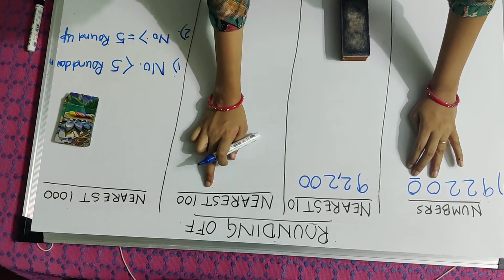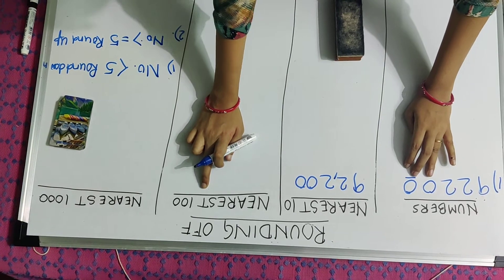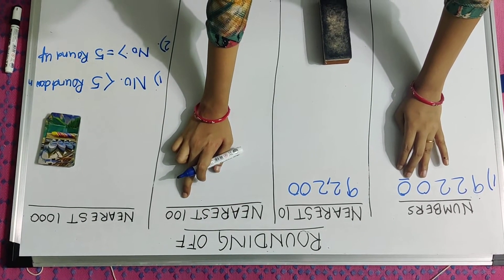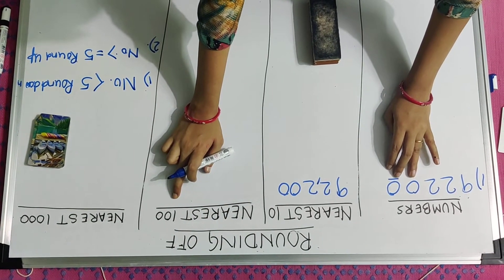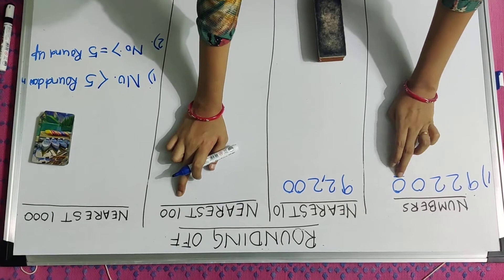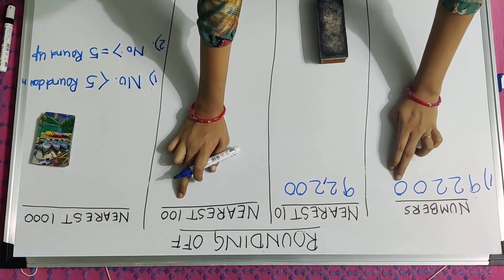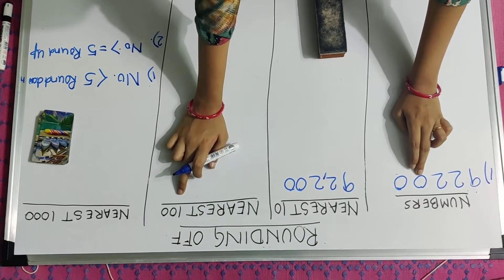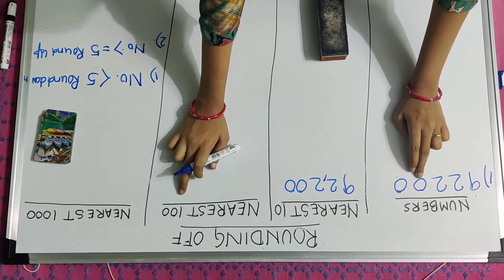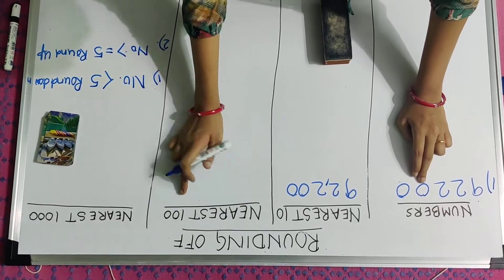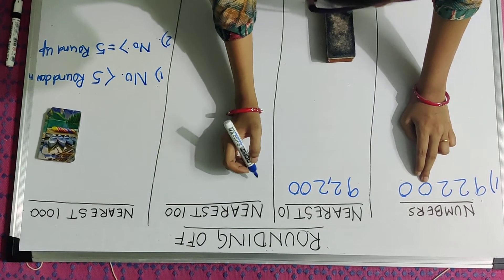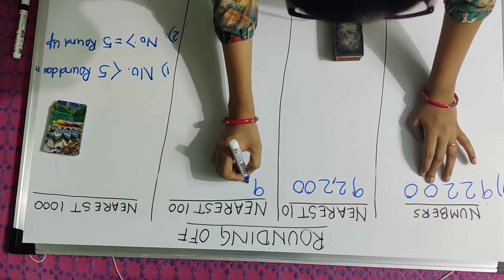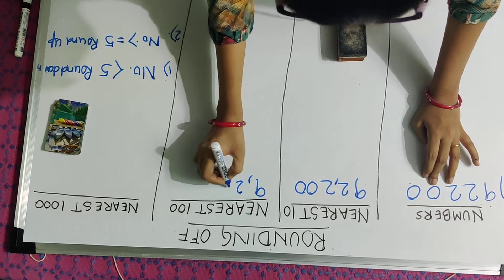My second activity is to round this number to its nearest 100. In that also I have to check its 10's place, which is less than 5. So I will apply rule number 1 — there will be no change in its 100's place. So my number will remain the same.